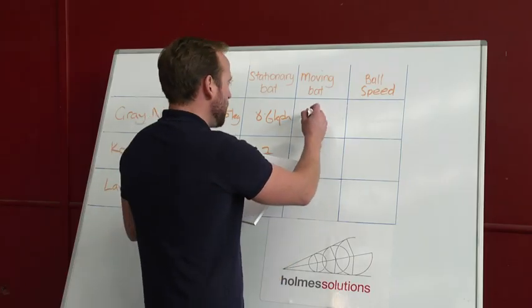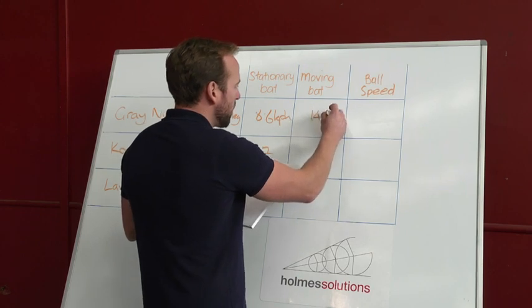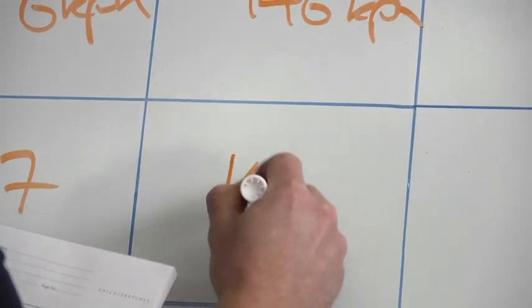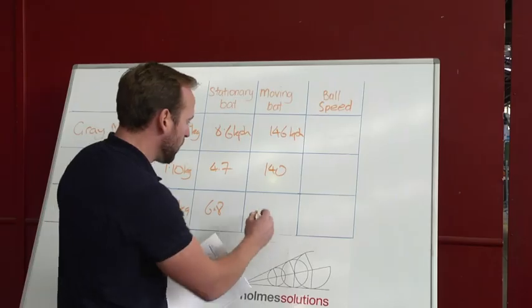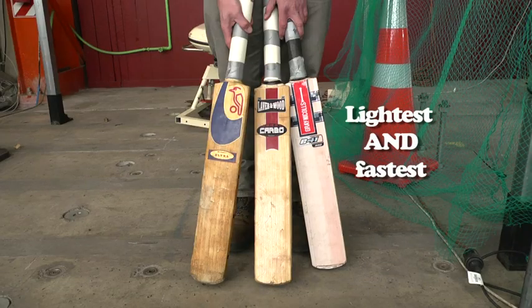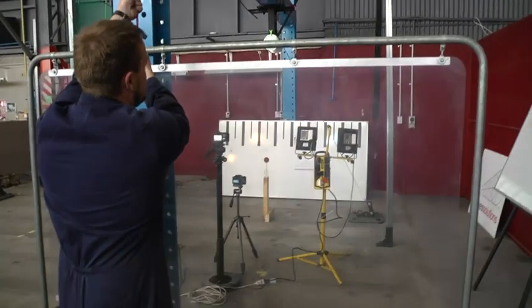This moving experiment shows two things. Firstly, the relative speed of the bats. The Grey Nickels is moving at 146 kilometers per hour. The Kookaburra was at 140. The Laver and Wood was also going at 140 kilometers per hour. Pretty much what you'd expect - the lighter bat going faster through the air than the heavier ones. Three, two, one...